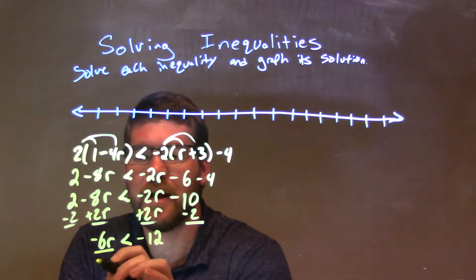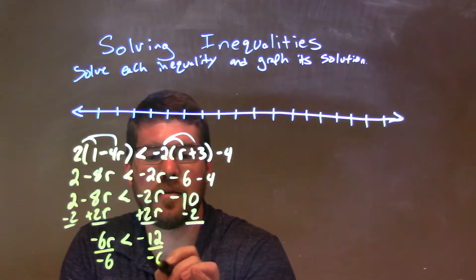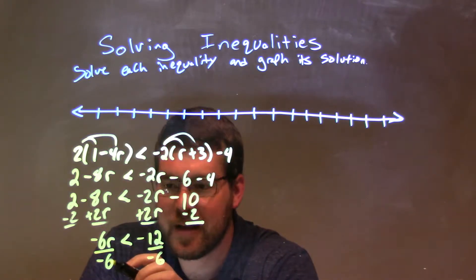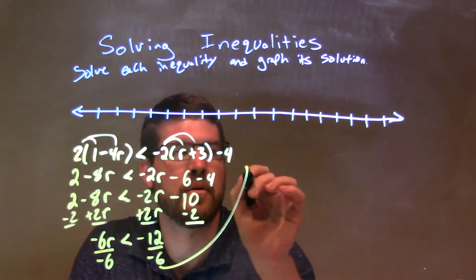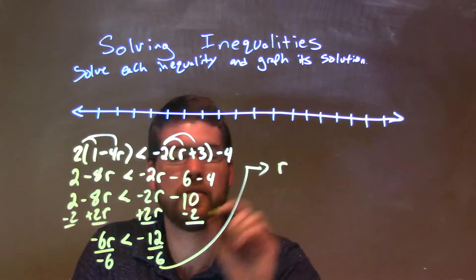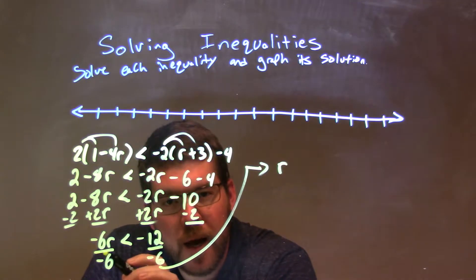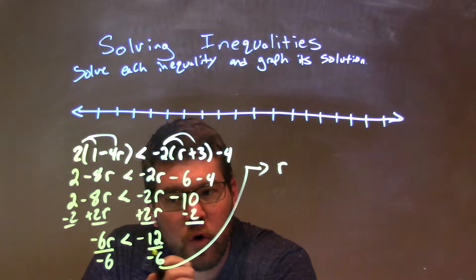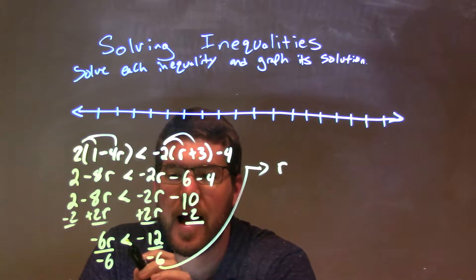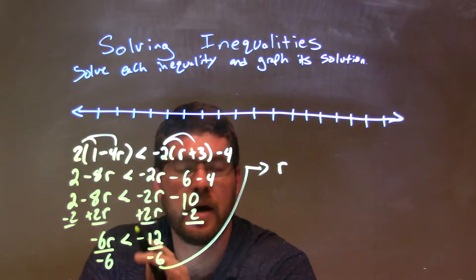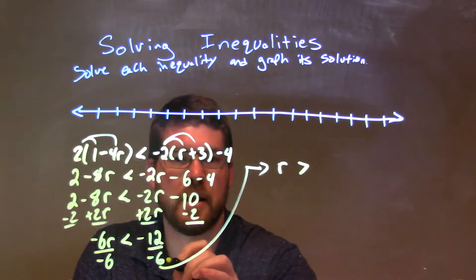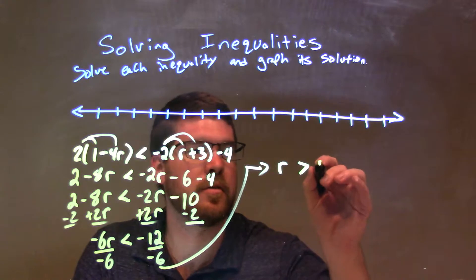At this point I need to divide by negative 6 on both sides. Dividing by negative 6 on both sides gives me r by itself. But since I'm dividing by a negative over this inequality, that less than sign flips to a greater than sign. So we have a greater than symbol, and negative 12 divided by negative 6 is positive 2.